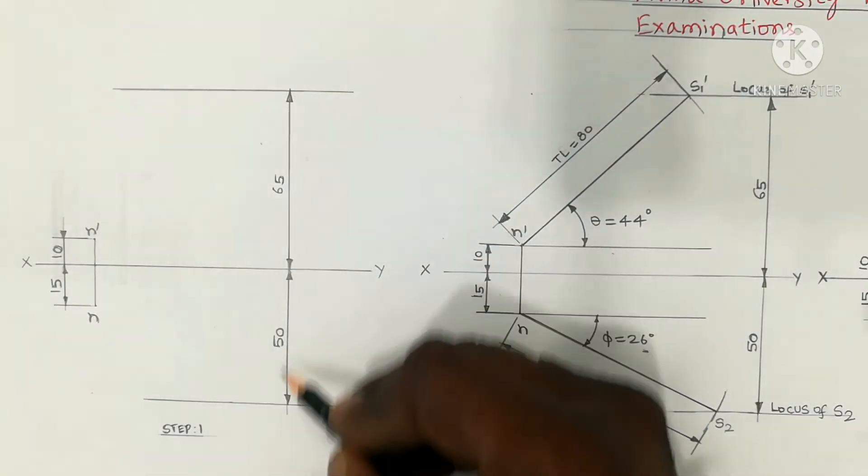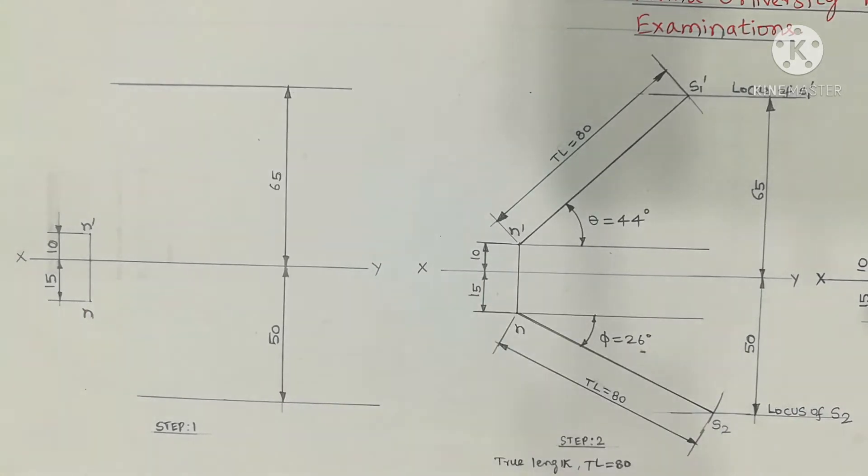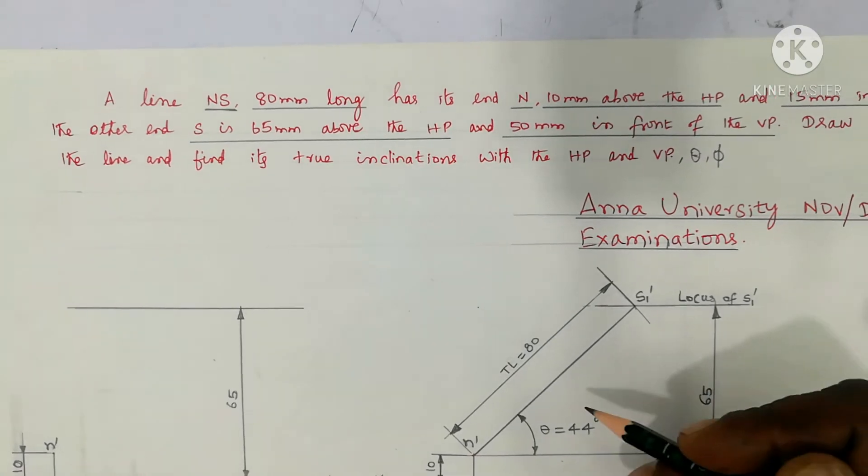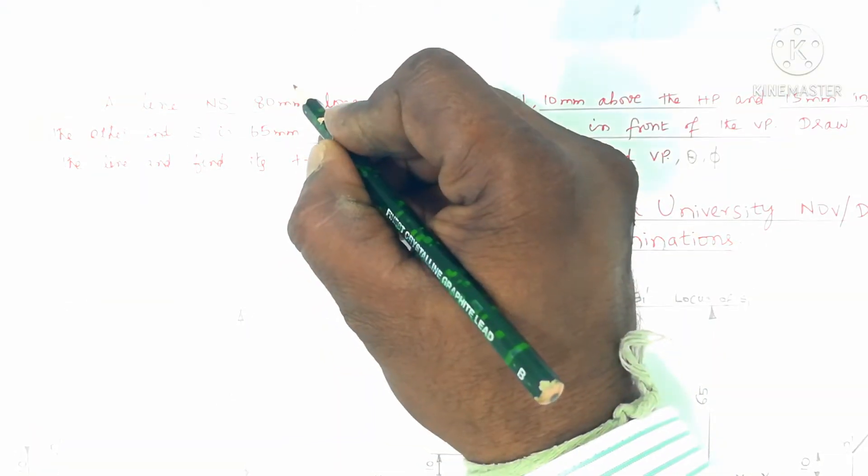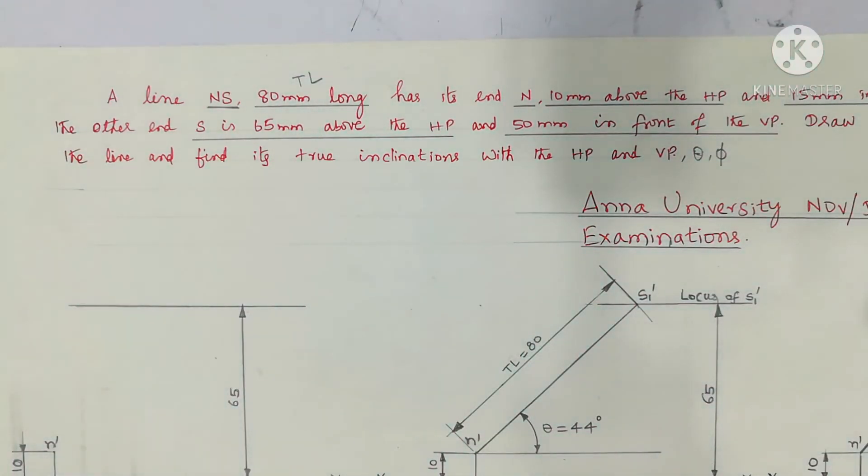So next, true length of the line is 80mm. So true length is 80mm. Refer the question - NS 80mm long is the true length. TL shortly written as TL. TL is true length of the line, 80mm long.